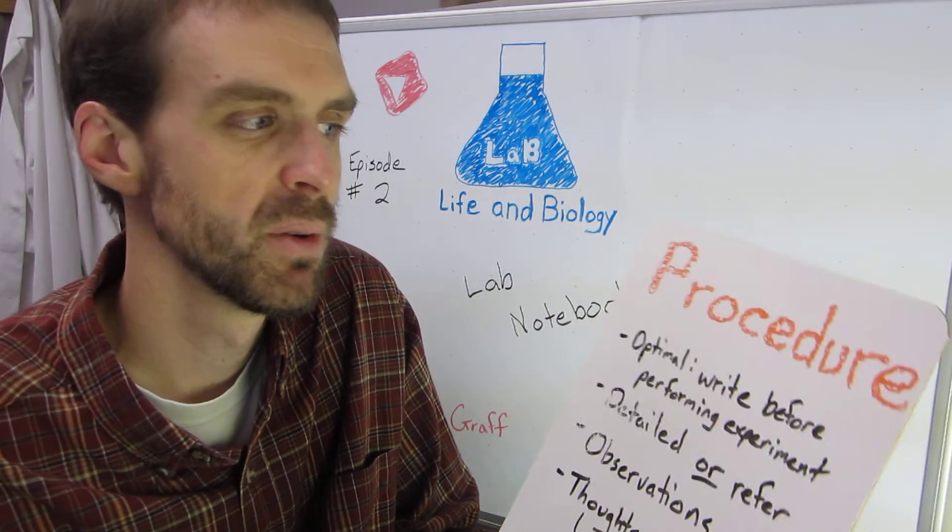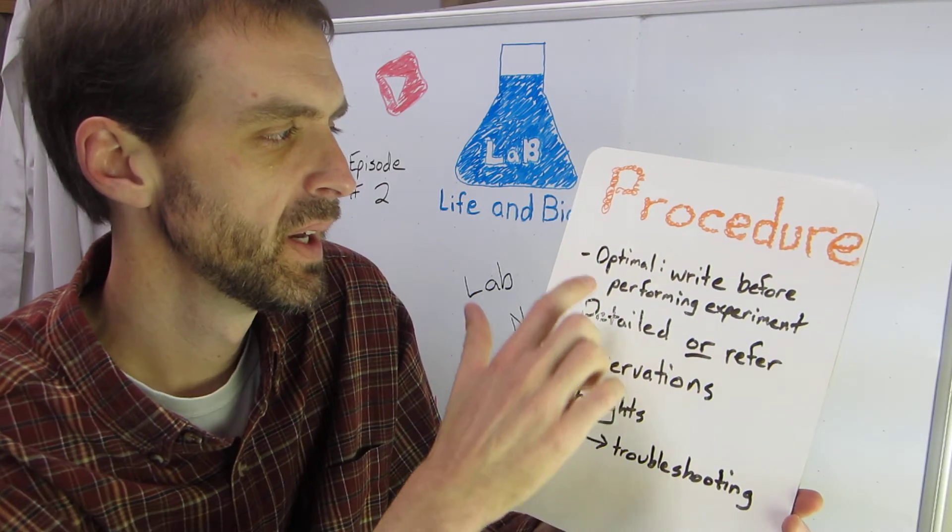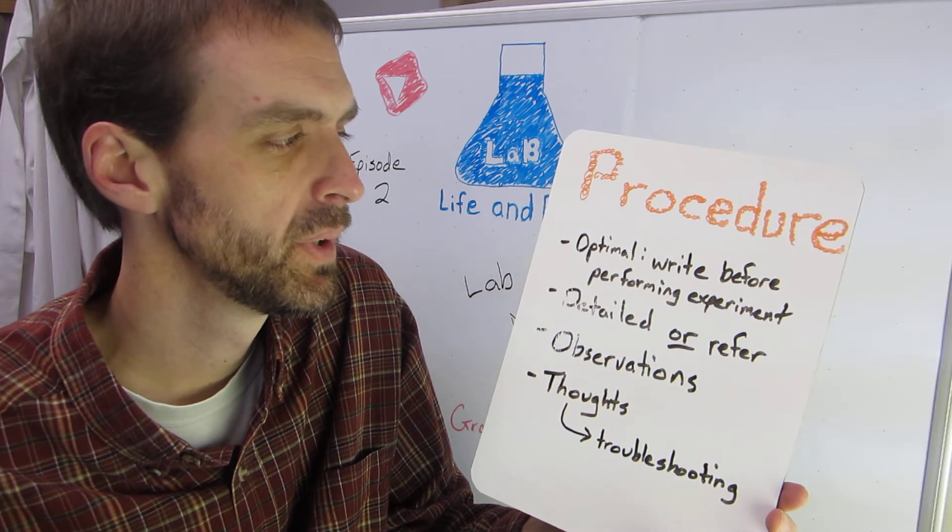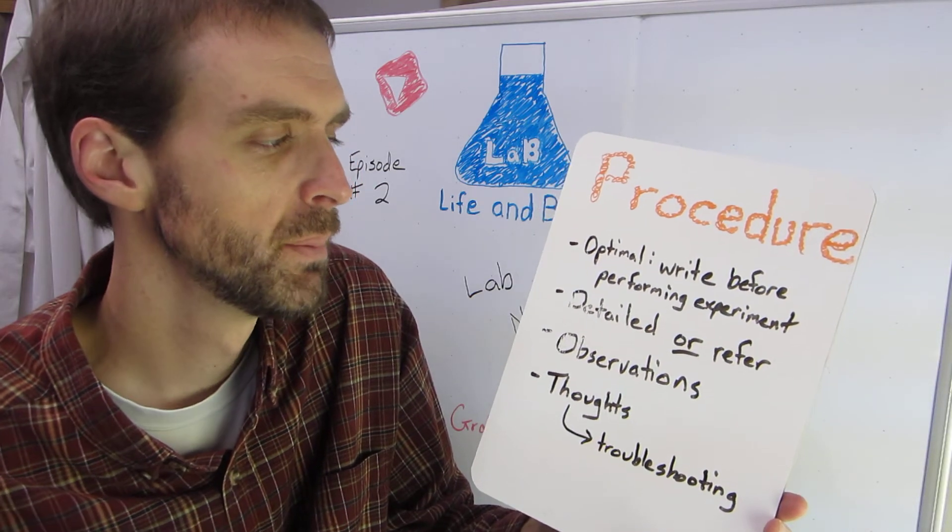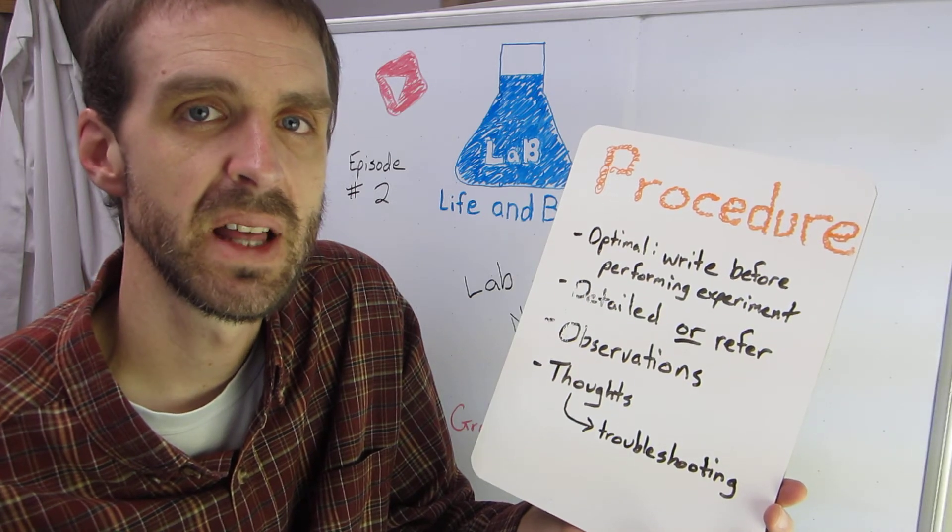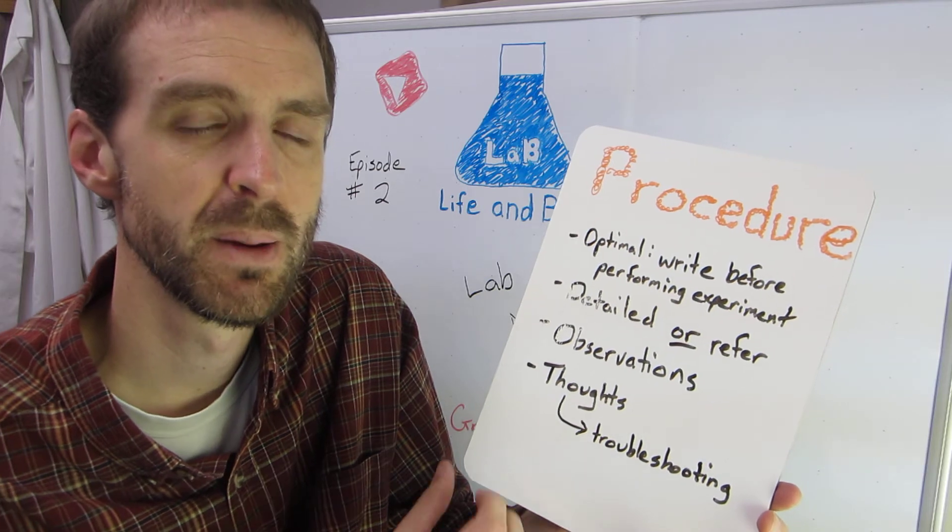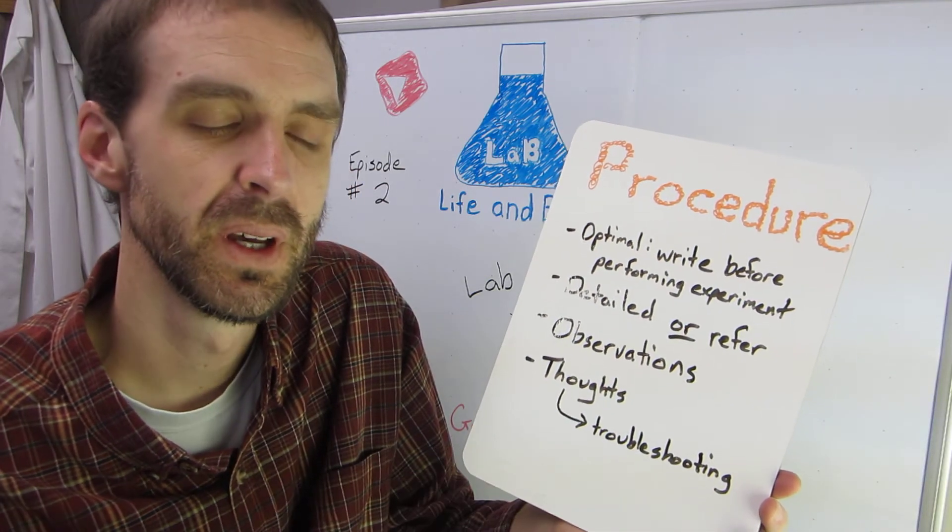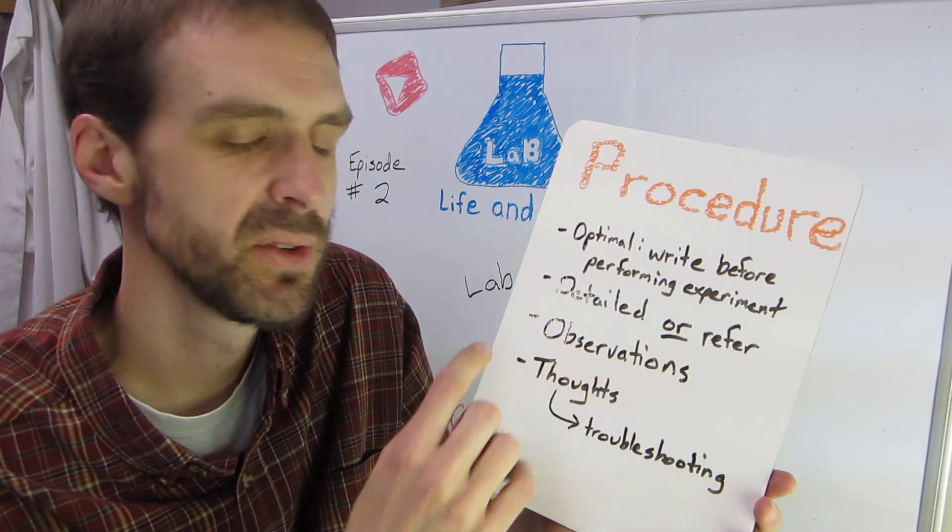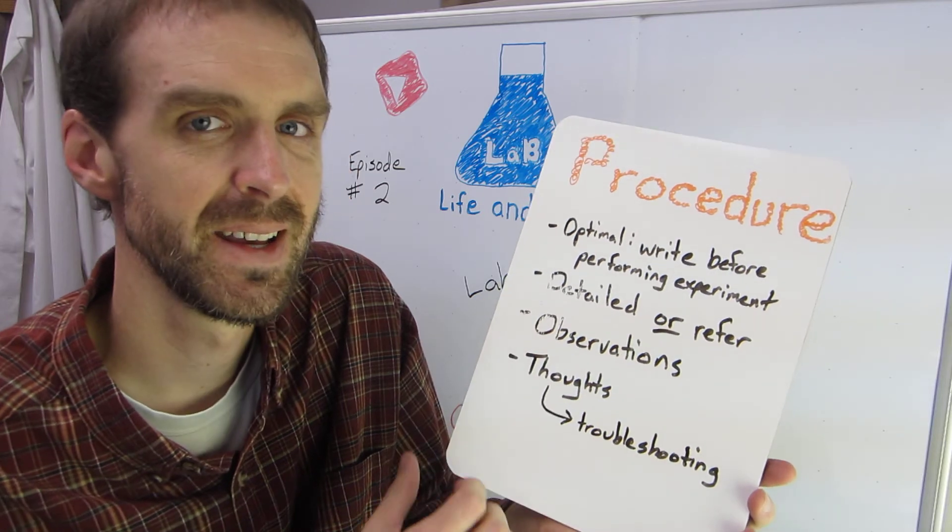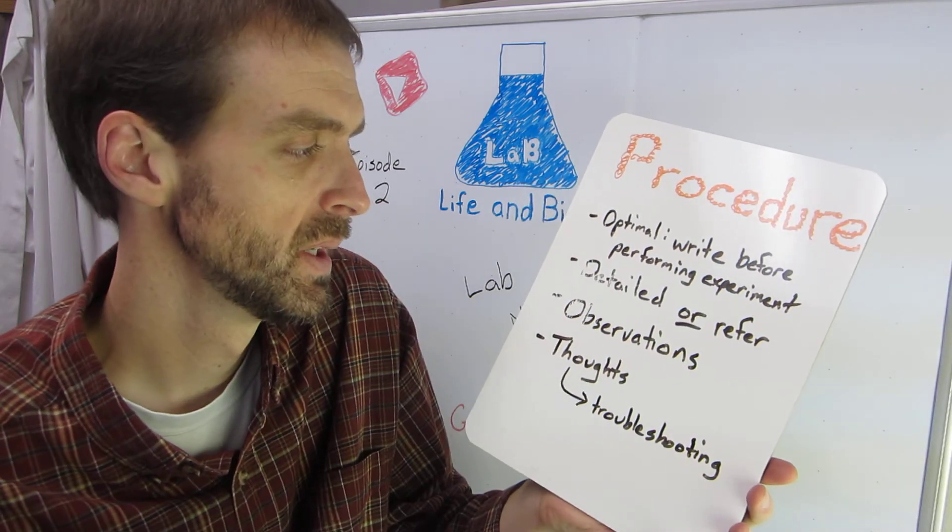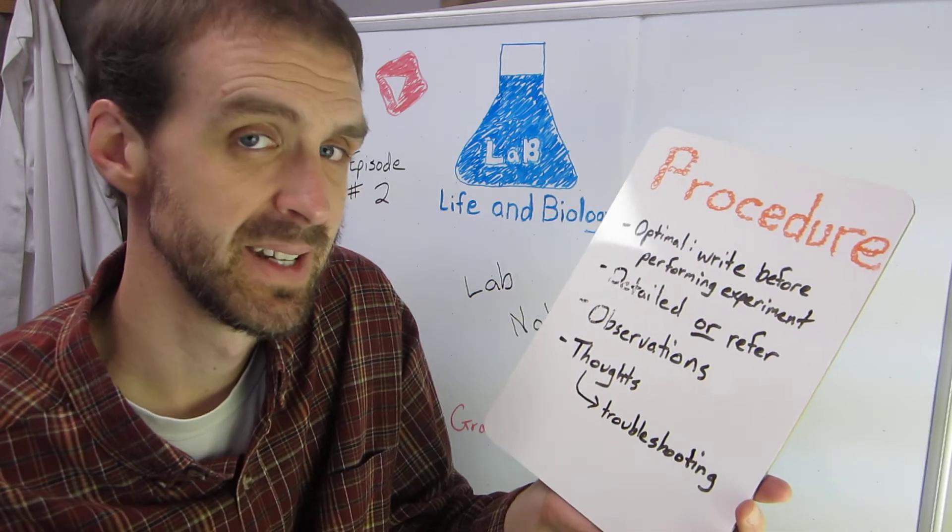So then the next part of a lab notebook is writing your procedures. So it's well advised and optimal to write in your lab book before you do the experiment. But you can get busy sometimes, and this doesn't always happen. But make sure that you write your procedure down. And it should be detailed. And by detailed, I mean if someone else were to just look at your lab book, read through your notes, they should be able to reproduce the experiment fairly well compared to what you did just from your notes. They shouldn't have to ask you any questions about what you did. Sometimes you do experiments over and over. And so writing a detailed procedure every single time might be unnecessary if you can refer back to a previous lab book entry where you did do a detailed procedure.